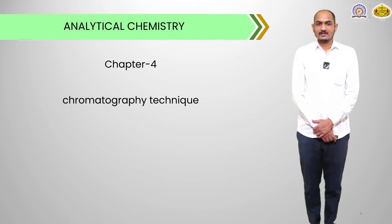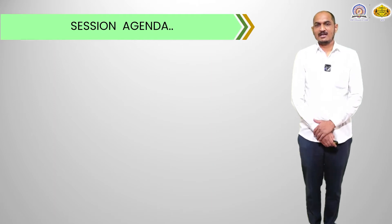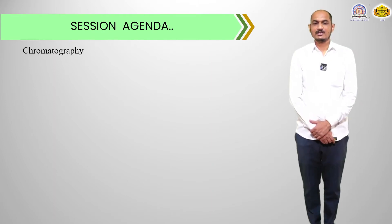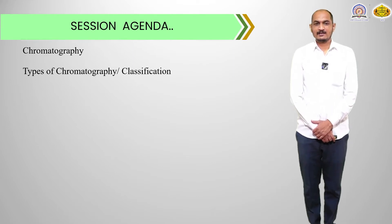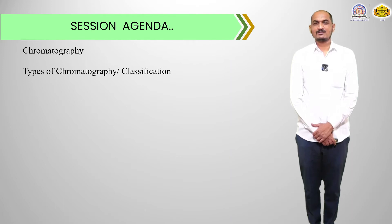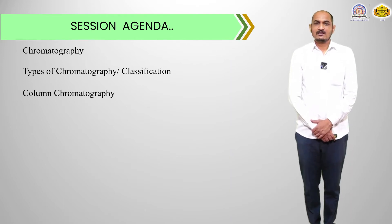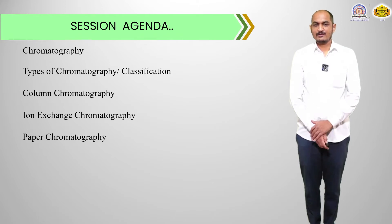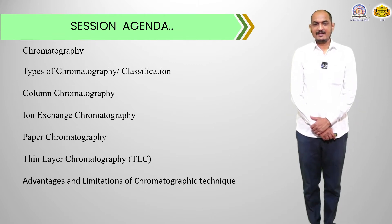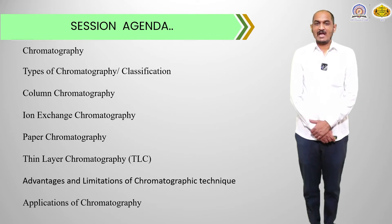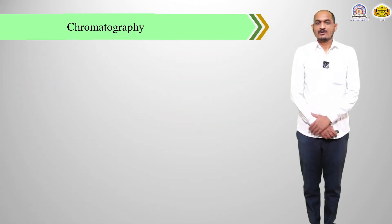From this course, today we discuss chapter number 4, that is the chromatographic technique. The session agenda for today's session is: first we discuss chromatography, what is meant by chromatography, their definitions, and the basic part of the chromatography techniques. Then we discuss the types of chromatography, or the classification of chromatography. Then we discuss some types of chromatography like column chromatography, ion exchange chromatography, paper chromatography, thin layer chromatography, and finally we discuss advantages and limitations of chromatographic techniques with their applications. Now we start with some basic points about the chromatographic techniques.